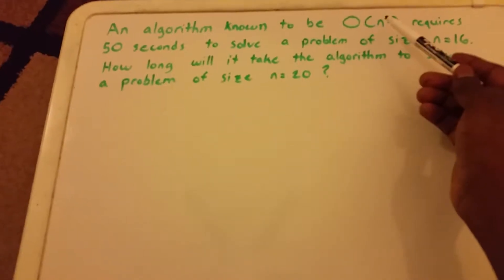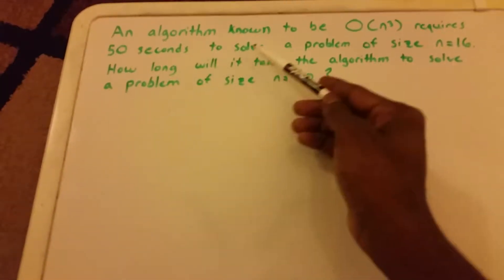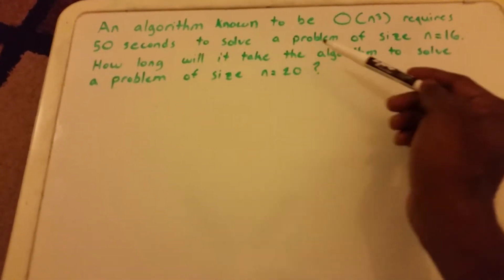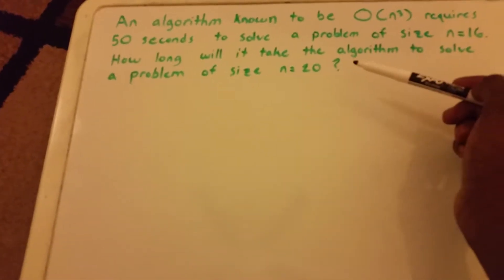It says an algorithm known to be O(n³) requires 50 seconds to solve a problem of size n equals 16. How long will it take the algorithm to solve a problem of size n equals 20?